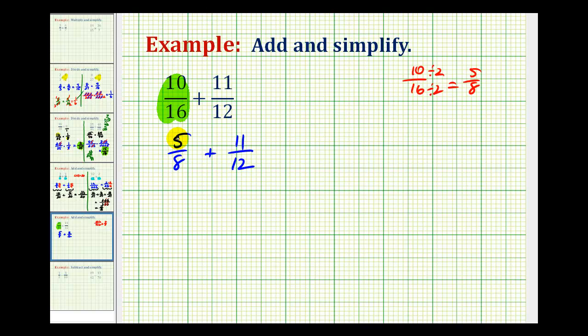One way to identify the least common denominator is to look at the prime factorization of the denominators. So let's rewrite 5 eighths as 5 over the prime factorization of 8, which would be 2 times 2 times 2, plus 11 over the prime factorization of 12. Well 12 is 4 times 3 and 4 is 2 times 2. So we'll have 2 times 2 times 3.